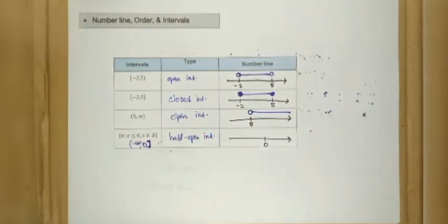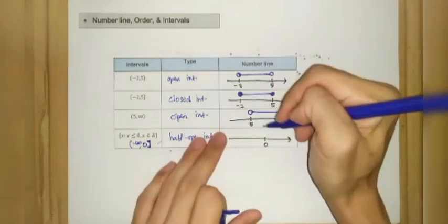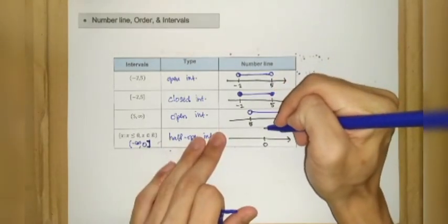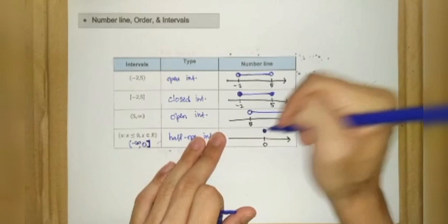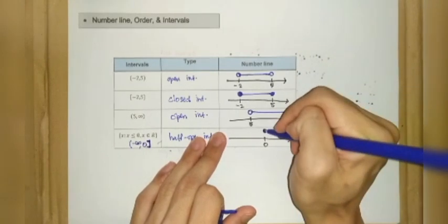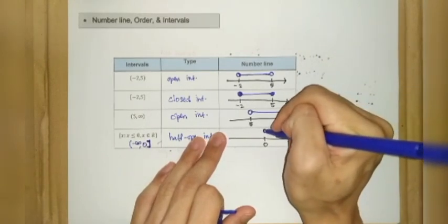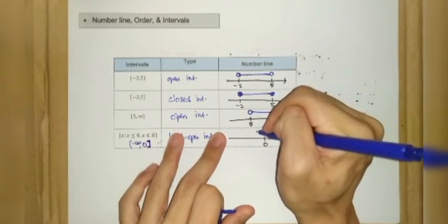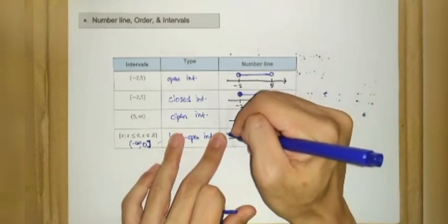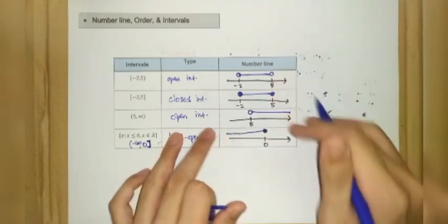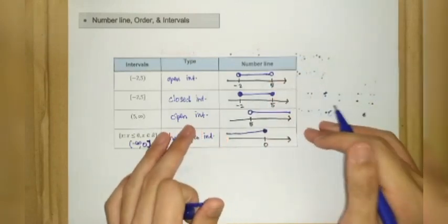On the number line, we start with 0 going down to negative infinity. Since 0 is included, we place a dense dot at 0 and the line goes straight down to negative infinity.